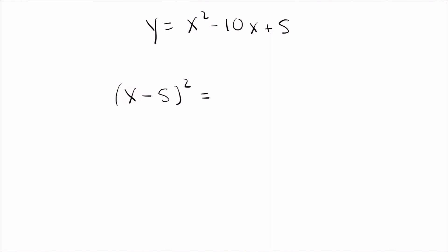So again, if you take the time to FOIL this out, you would get x squared minus 10x plus 25. So just like last time, the first two terms match. The x squared minus 10x, those match. The things that don't match is I got a 25, but I only want 5.